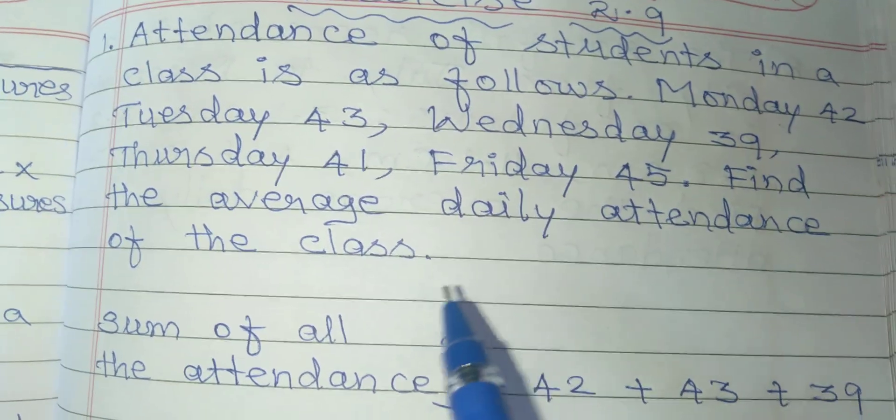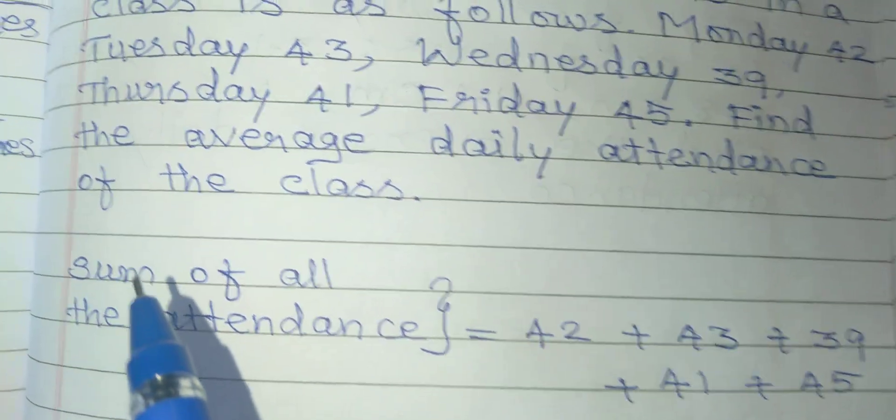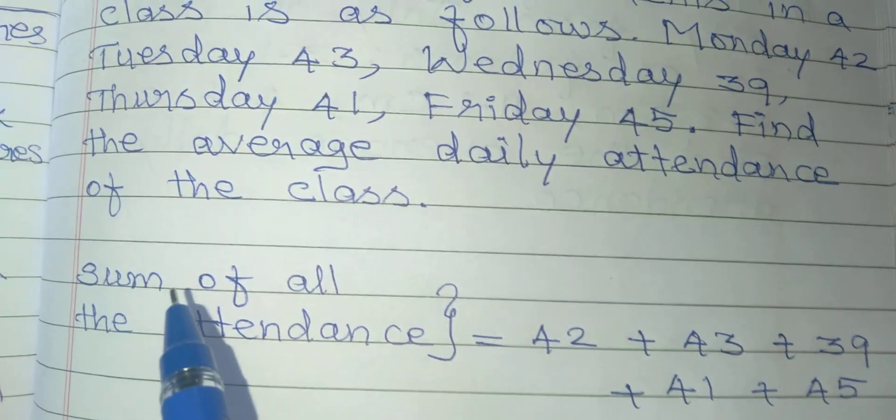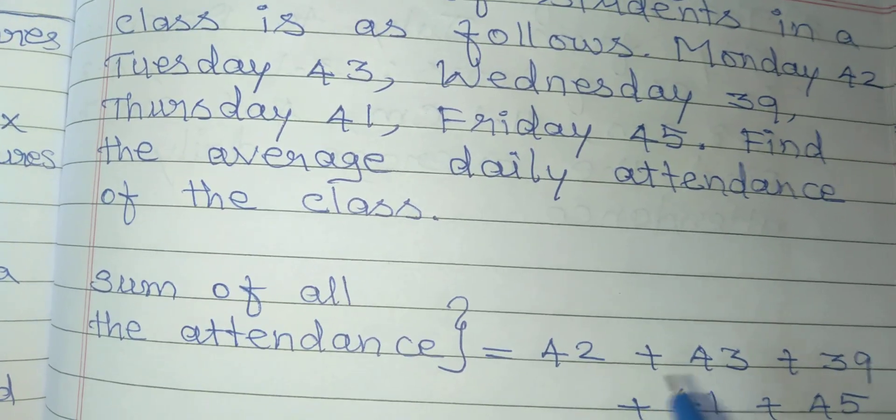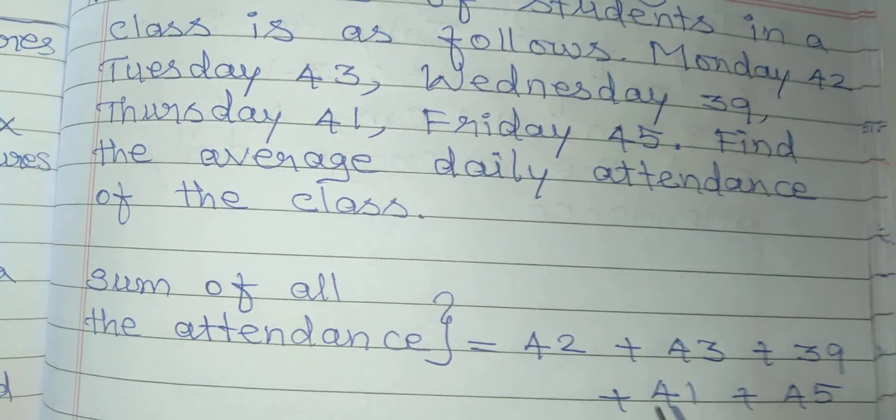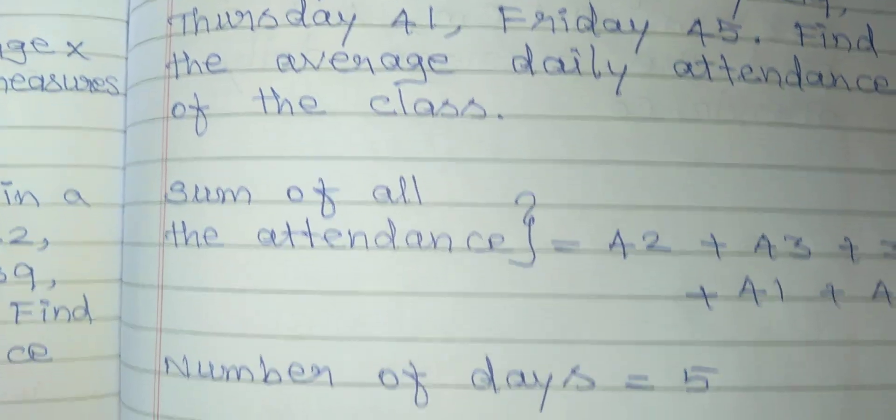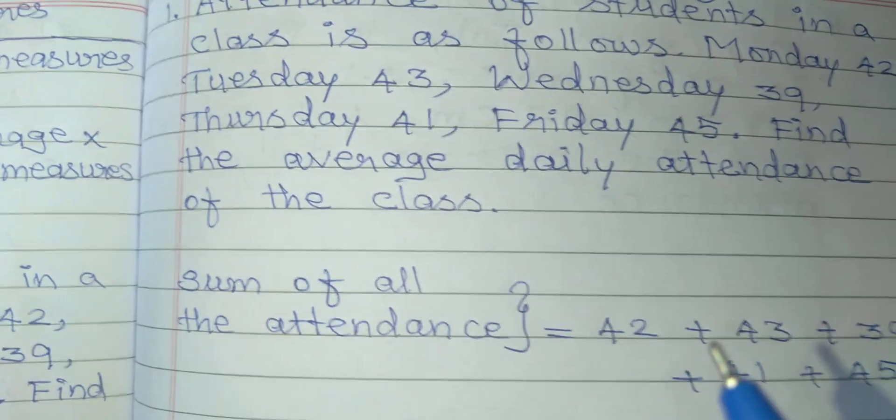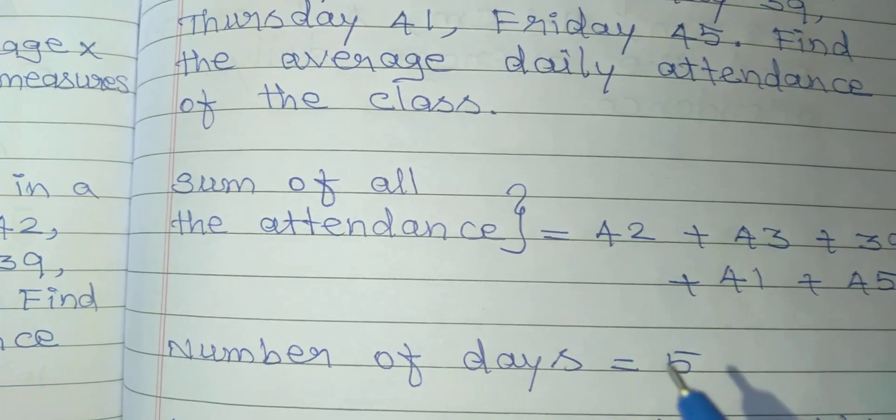First, we need the sum of all the attendance. Sum means addition of all the attendance, which equals 42 plus 43 plus 39 plus 41 plus 45. Then, the number of days - from Monday to Friday, that's 5 days total.